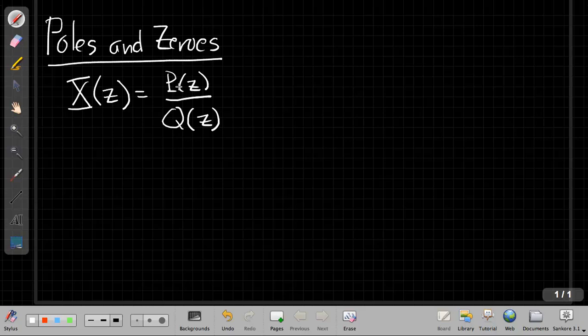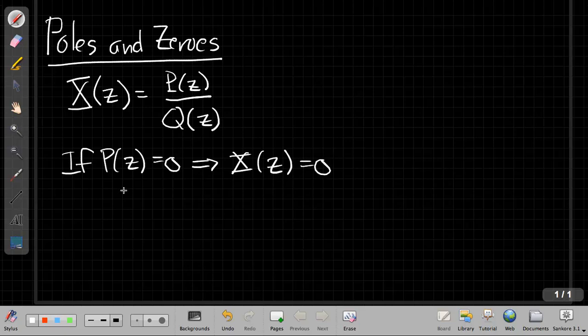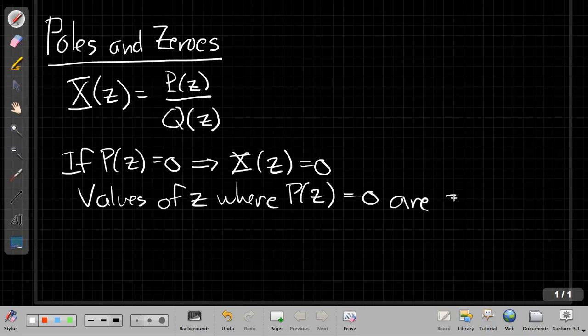The values of Z that make this fraction either go to zero or infinity turn out to have important properties in determining how the system behaves. If P(Z) equals zero, that tells us X(Z) equals zero. So the values of Z where P(Z) equals zero are what we call the zeros of X(Z).